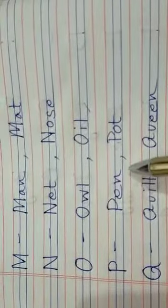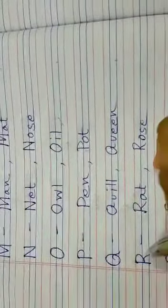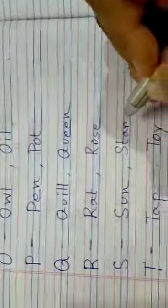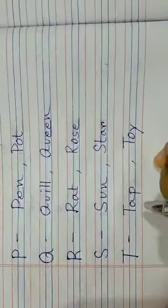Once again I am repeating: P for pen, P for pot. Q for quill — quill meaning I have already told you, in Bengali I have also said — quill means palok, the feather. R for rat, R for rose, S for sun, S for star, T for tap, T for toy.